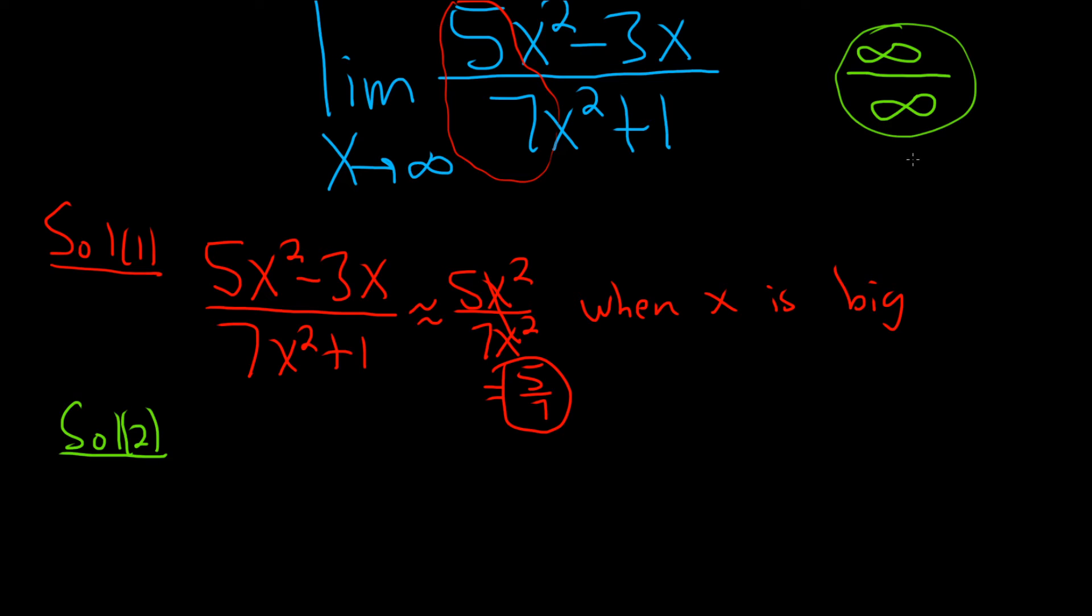Now, there are many indeterminate forms in mathematics, but whenever you have one that looks like this, you can use something called L'Hopital's rule. L'Hopital's rule basically says that whenever you have infinity over infinity, or maybe 0 over 0 also works, but in this case infinity over infinity, you just take the derivative.